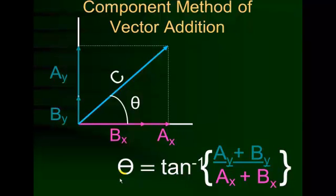This is our method for solving vector addition when the two vectors are not aligned on the same axis. It saves us having to use graph paper, straight edges, and protractors. We will use this many times, so you need to practice it and try to get the concept down.